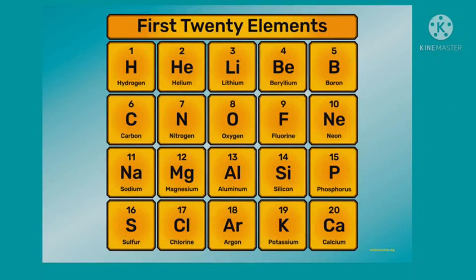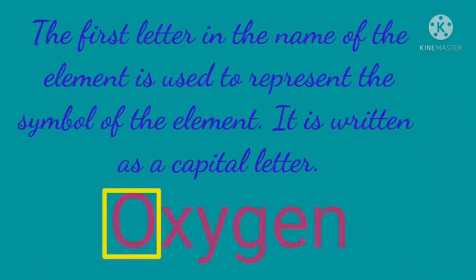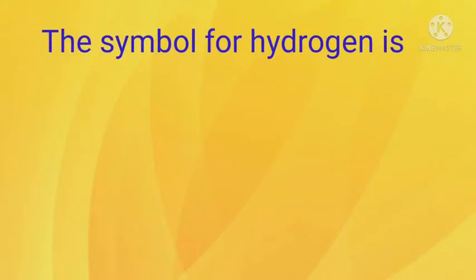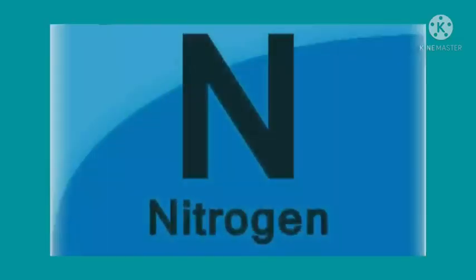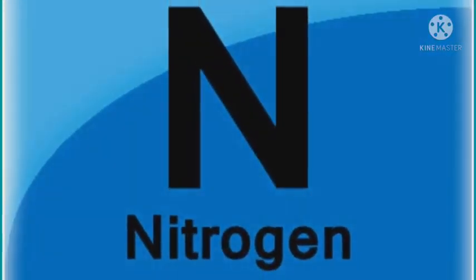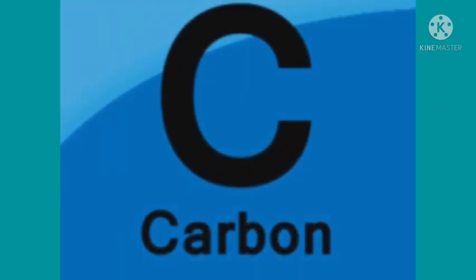Now, let us discuss the rules to be followed for deciding these symbols. The first letter in the name of the element is used to represent the symbol of the element, and it is written as a capital letter. For example, the symbol for hydrogen is H, for nitrogen is N, and for carbon is C.